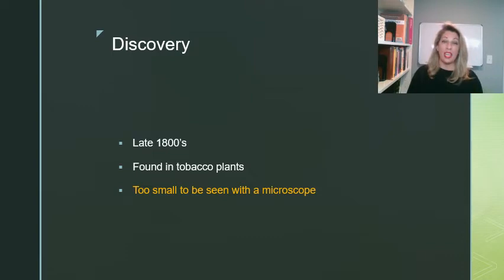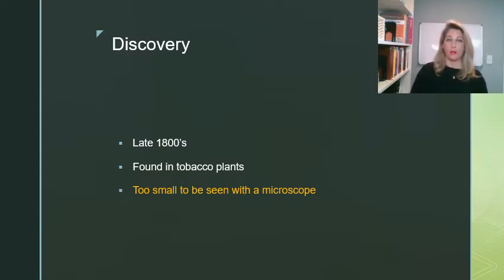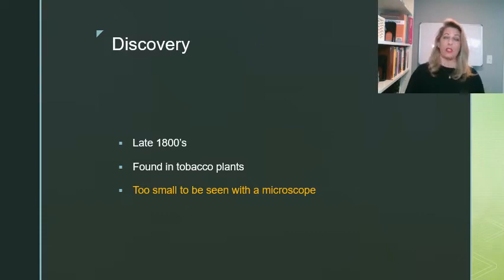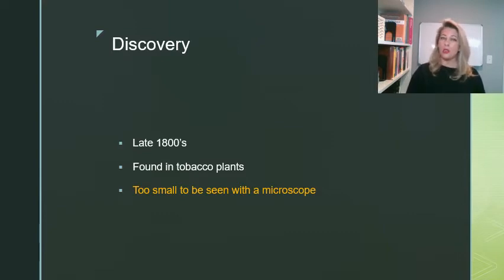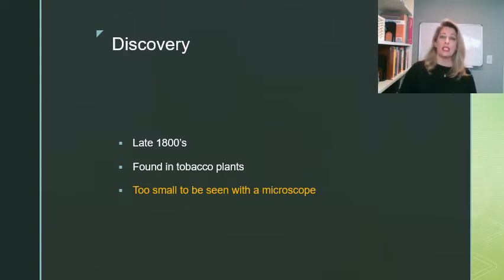Viruses were actually discovered in the late 1800s. Farmers were struggling with their tobacco plants — sometimes they would get what they thought was an infection; the plants would turn yellow and get spots all over them. Scientists were baffled because it didn't behave like anything living that was attacking the plants. They found they could get whatever it was out in the liquid portion of the plant. It was too small to see under a microscope, and they could crystallize the liquid and it would still be infectious. So they knew it wasn't living, but was some sort of particle killing the tobacco plants. One scientist named it a virus, which is Latin for poison.